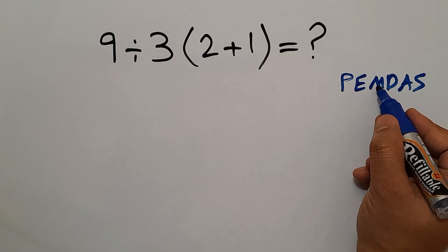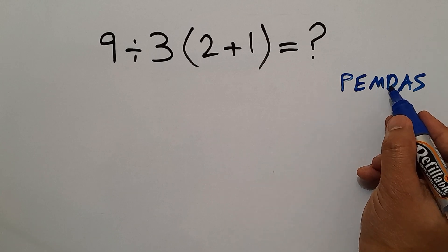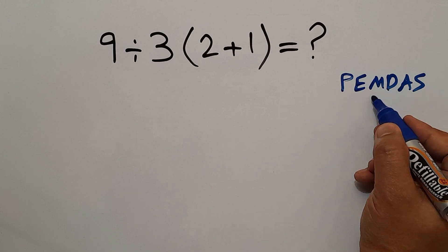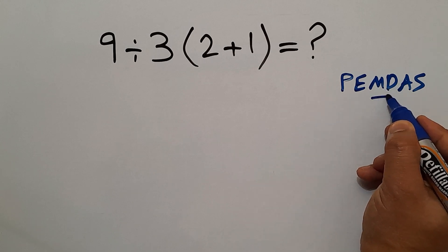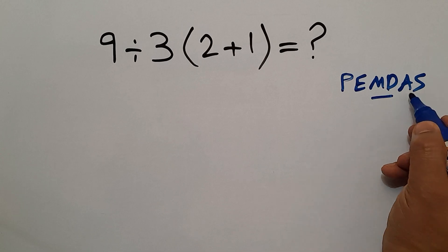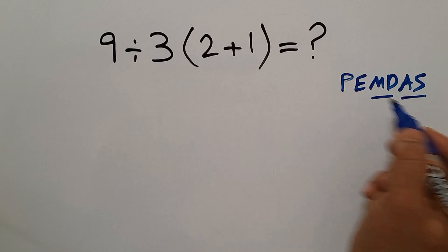As we know, multiplication and division have equal priority, and we have to work from left to right. The same applies to addition and subtraction.